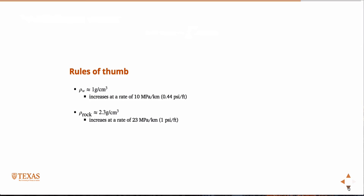So a couple of rules of thumb. And these are things you should probably just memorize. They're rules of thumb, that's sort of the point of a rule of thumb, is something you just know. You should also probably memorize them because they might show up on the test. Density of water is one gram per cubic centimeter. That's sort of the definition of a gram. And it increases at a rate of 10 megapascal per kilometer, or 0.44 PSI per foot.